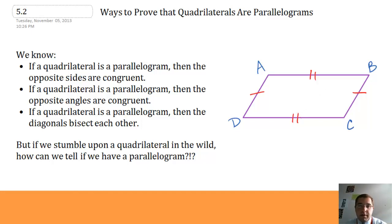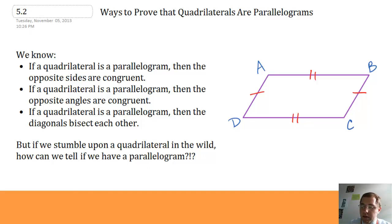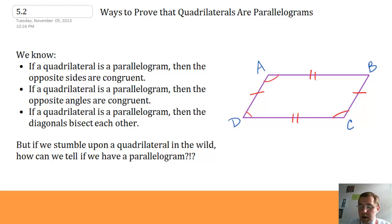We also know that if a quadrilateral is a parallelogram, then the opposite angles are congruent. So I would know that angle A is congruent to angle C, and angle D is congruent to angle B. The opposite angles are congruent.